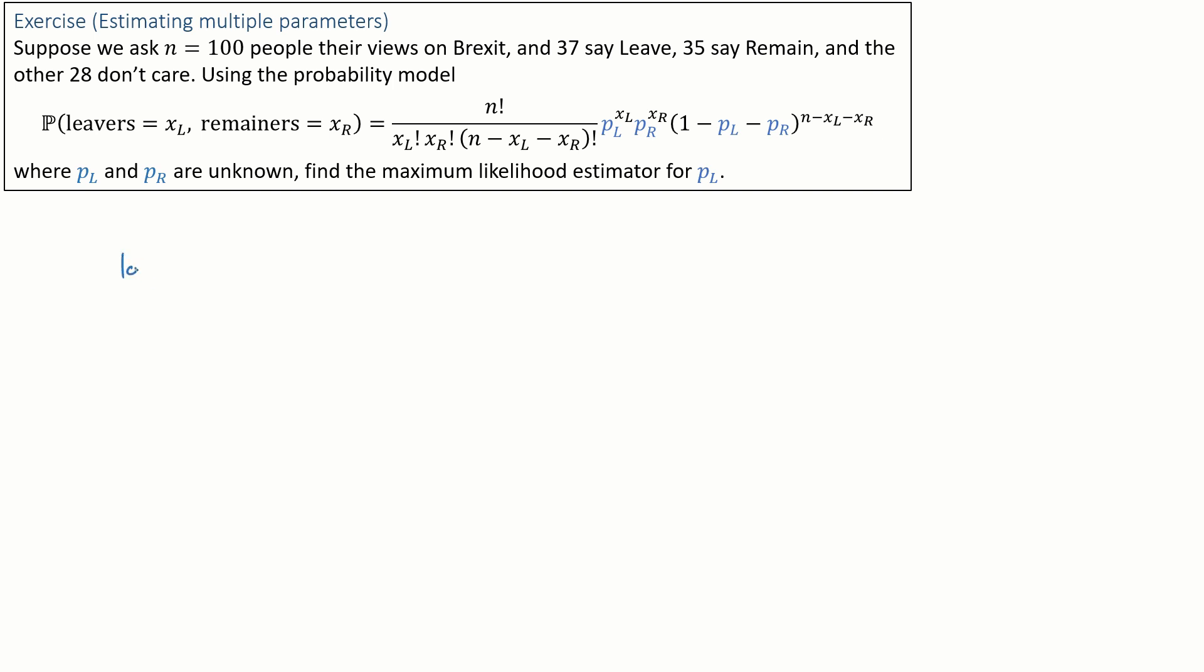Write out the log likelihood. And find out where the maximum is. I have to differentiate with respect to both of the unknown variables. There are two variables, so I set two derivatives equal to zero. This gives me simultaneous equations which I can solve for p_L and for p_R. And the solution comes out to be this.